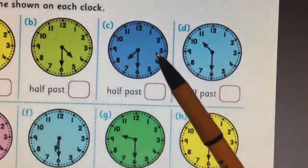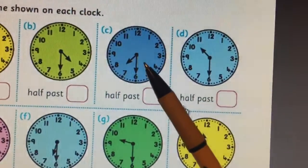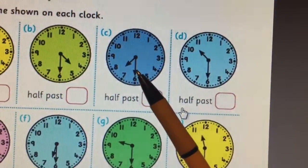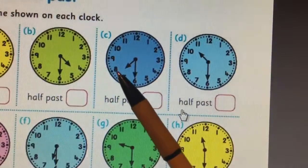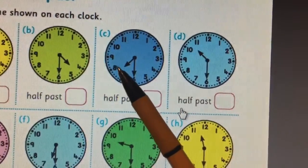Can you do these ones yourself? So it's half past because the big hand is at six and it's in between seven and eight, so it's half past seven.